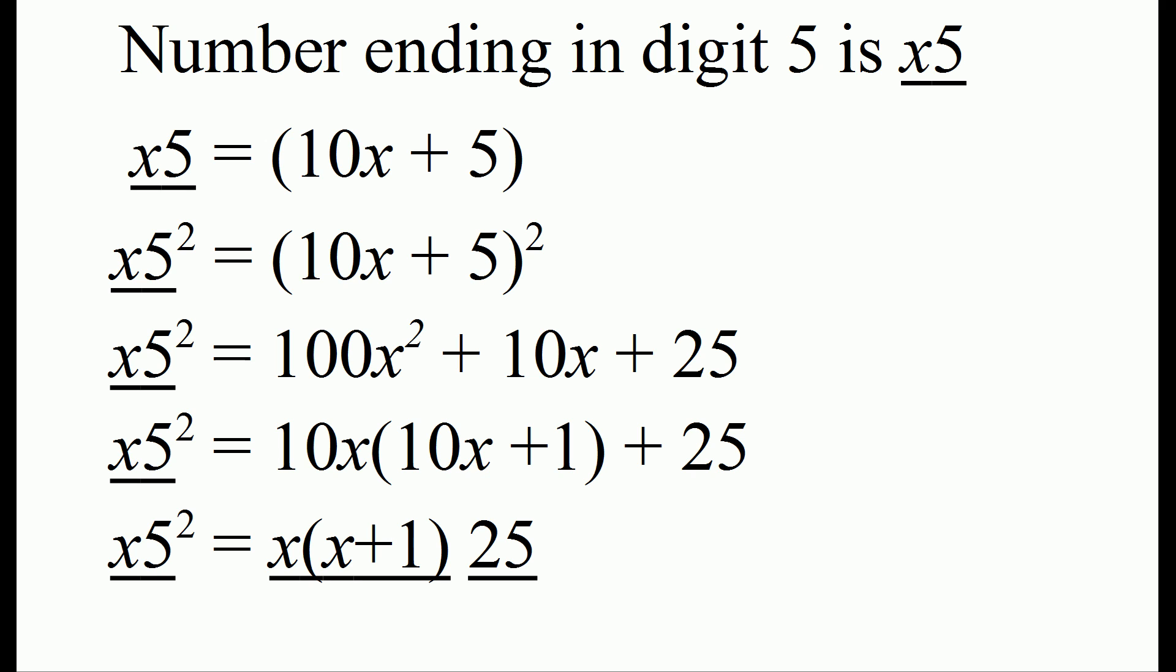So if we have x equals 5, we end up with 5 times 6 and then a 25 at the end. And that's why this procedure works.